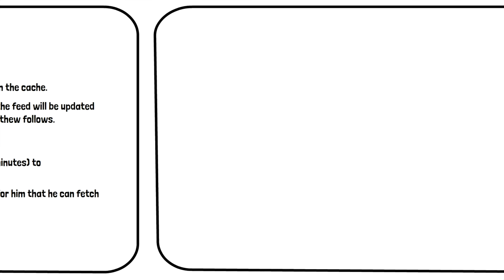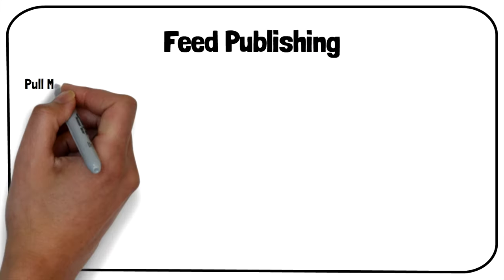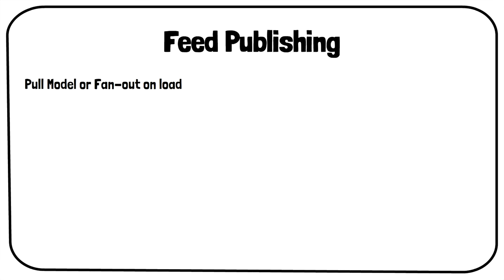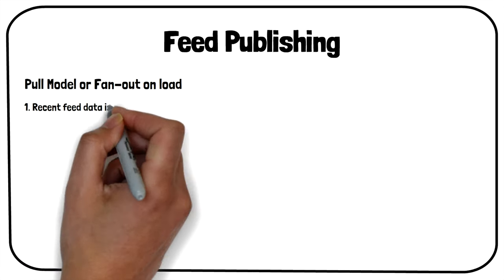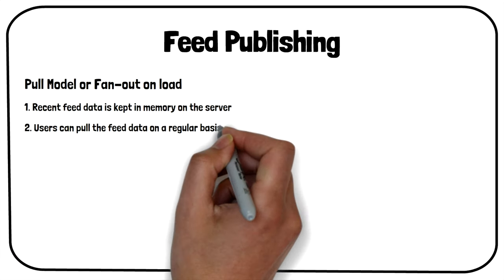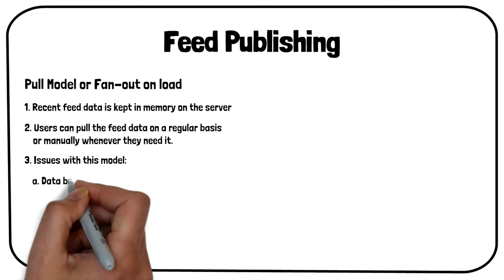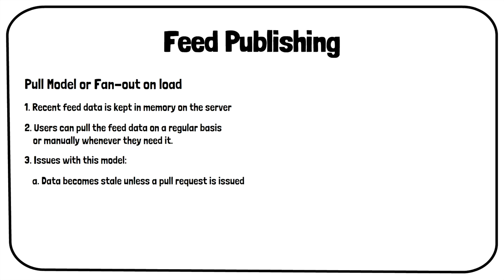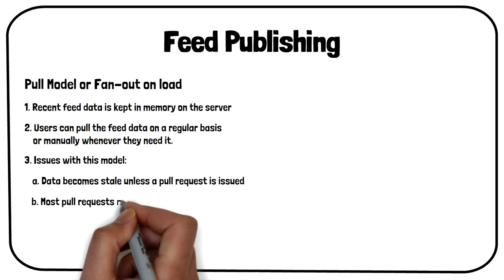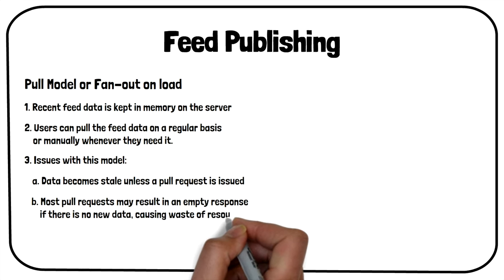The second part of this problem focuses on feed publishing. There are two approaches: pull or push model. The pull model is also known as fan-out on load. In this approach, recent feed data is kept in memory on the server, and users can pull it on a regular basis or manually whenever they need it. However, there are a few issues with this model. Data can become stale unless a pull request is issued. Also, most pull requests may result in an empty response if there is no new data, thus causing a waste of resources.